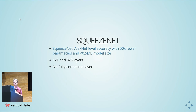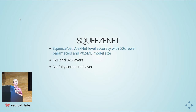For SqueezeNet: it has AlexNet-level accuracy — one of the first huge advances — but with 50 times fewer parameters. This is now a model with less than half a megabyte of parameters. Half a meg is less than many JavaScript libraries — it's quite a small model. They play around with 1×1 and 3×3 layers and even eliminate the fully connected layer at the end, because that's parameter-heavy.